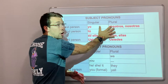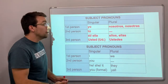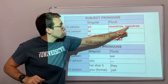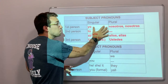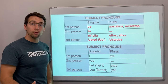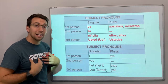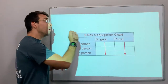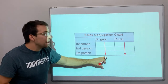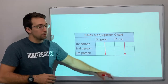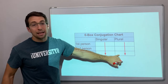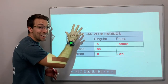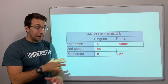Subject pronouns — as I promised, you have to know these. These subject pronouns fit in a conjugation chart. Today is the day we learn what conjugation means and how it all fits together: yo, tú, ella, usted, nosotros, nosotras, ellos, ellas, ustedes. These pronouns connect with and work together with the verbs. When looking at a conjugation chart, we go down the singular column, then across and down the plural column.